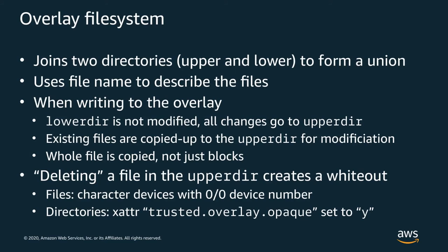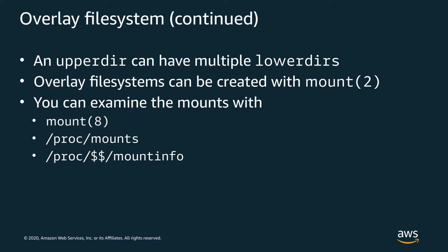Existing files in the lower-dir that are opened for write are copied to the upper-dir before the open syscall succeeds — this means large files can take a very long time to open and take up twice as much space, even if you only want to change one bit. When you delete a file in the upper-dir, it doesn't actually get deleted from the backing lower-dir. Instead, the overlay file system creates a special whiteout in the upper-dir. Files and directories have different whiteout implementations. Docker uses multiple ordered lower-dirs to implement layer storage. You can create an overlay by mounting with the overlay filesystem type and specifying upper-dir, lower-dir, and a working directory.